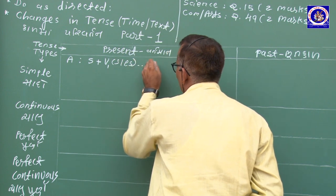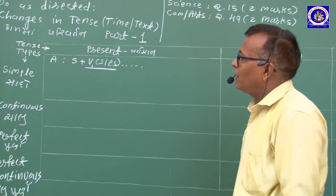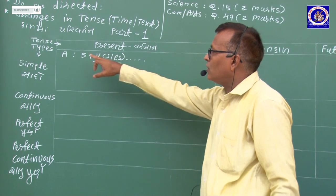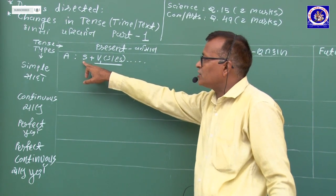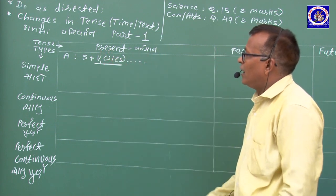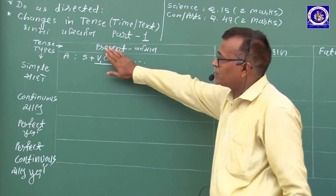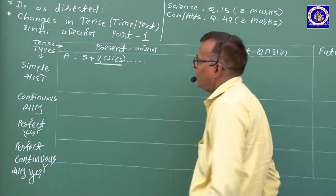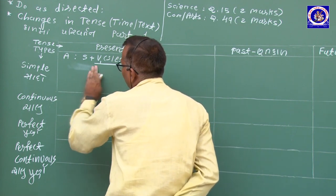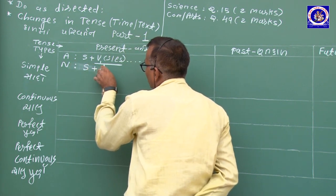સાધા વિધાન વાક્યની અંદર, He/She/It — એક વચન નામ આપેલ હોય તો ક્રિયાપદના અંતે -s કે -es પ્રત્યય લગાડવામાં આવે છે. બાકી બધા સાથે માત્ર plain verb. Negative બનાવવા: Negative વાક્યની અંદર Subject પછી do/does + not.